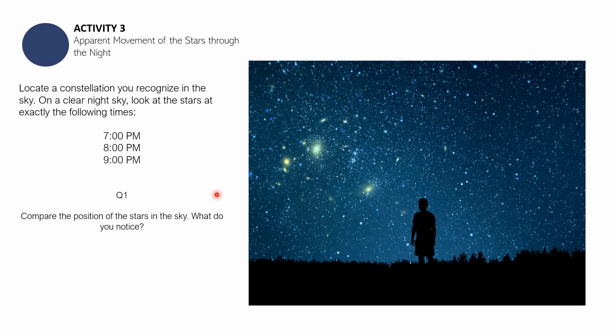So after that, you have to answer the following guide question. You can do this the morning after that night. For the first question, compare the position of the stars in the sky, what do you notice? Are the stars visible at 7 p.m. still visible at 9 p.m. in their original position? So why is that so? Is the constellation's position at 7 p.m. the same as its position during 10 or 11 p.m.? What do you think is the reason why that is so?